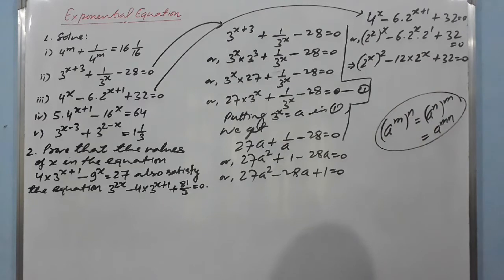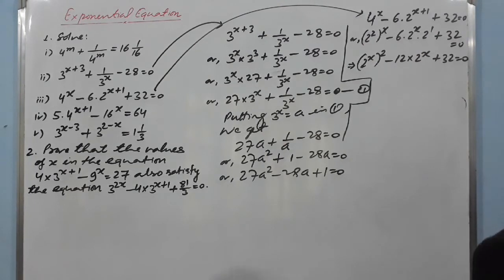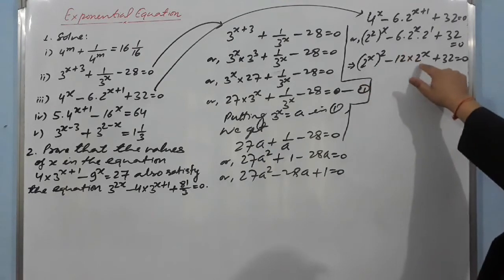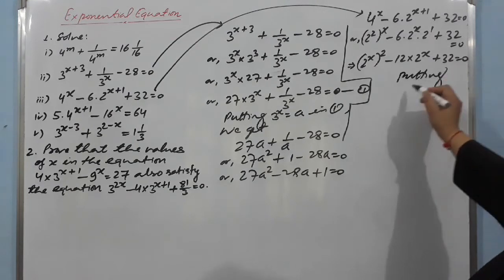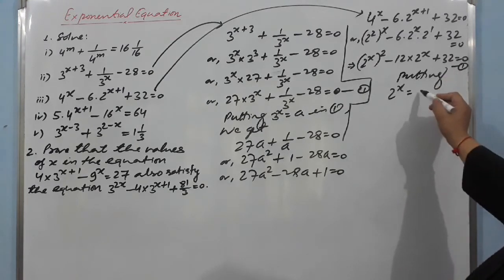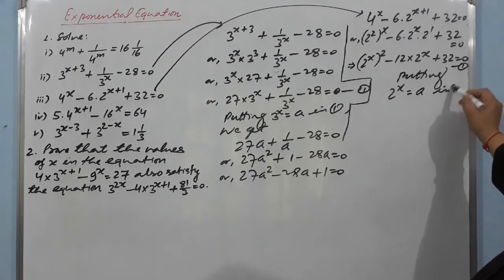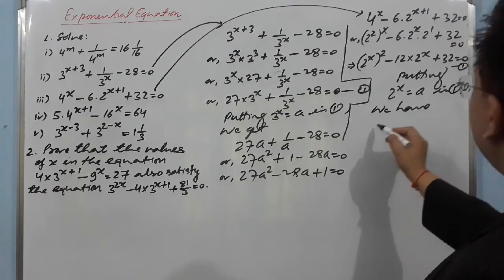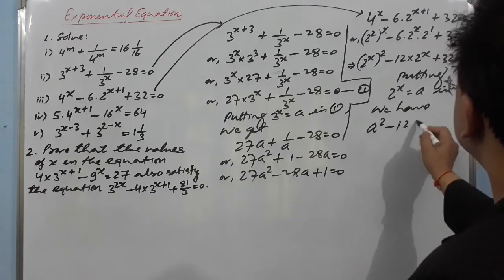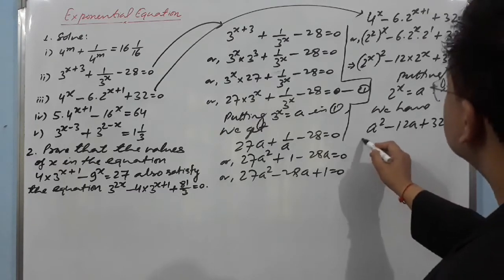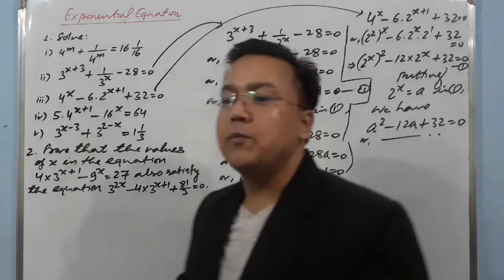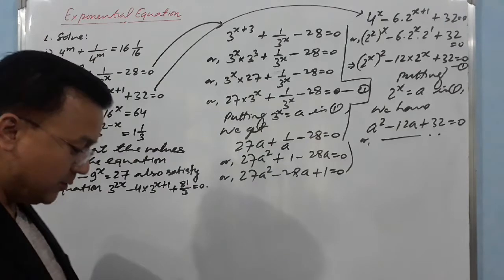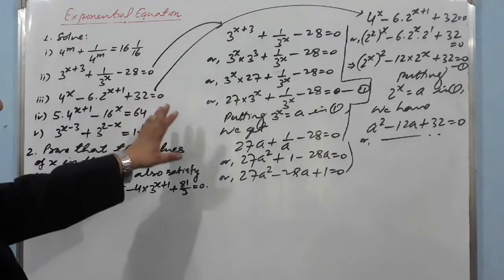Now substitute: putting 2^x = a, in the equation we get a² − 12a + 32 = 0. After this you can handle it very easily — factorize and find the values of x. I think you understood and will have no problem.